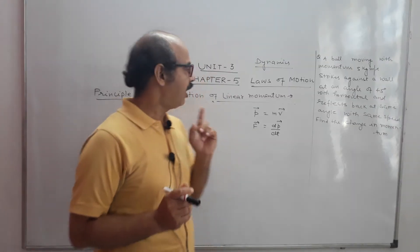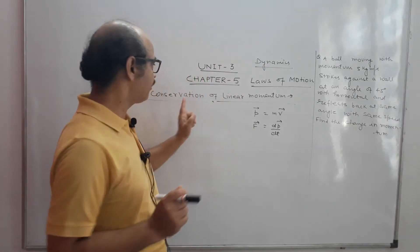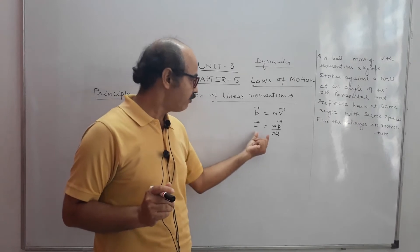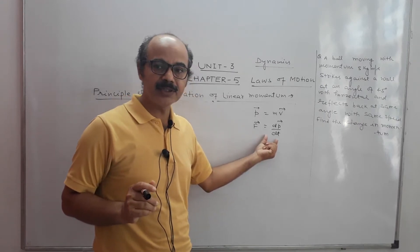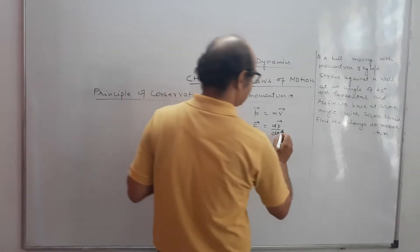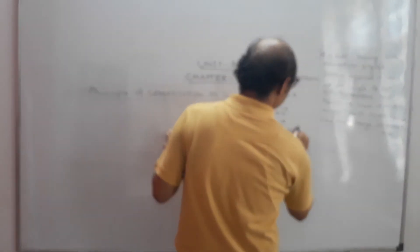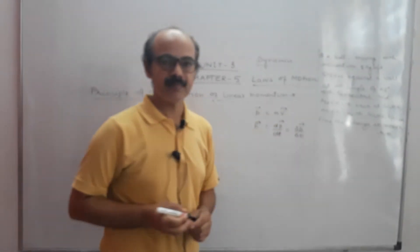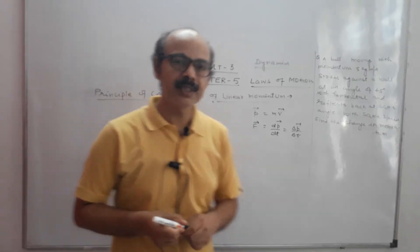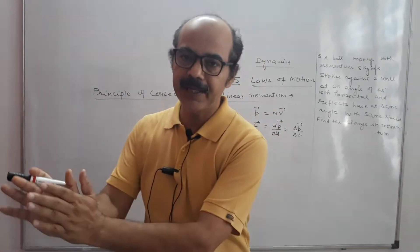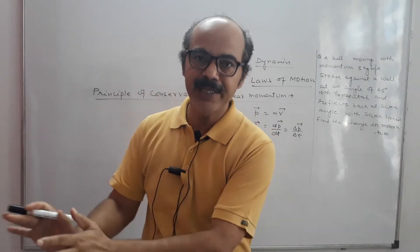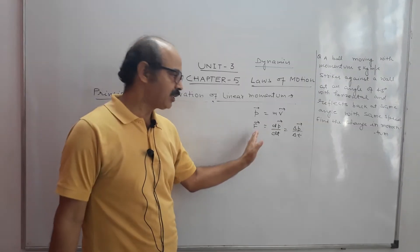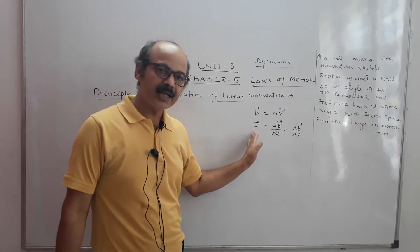Now we are going to study the Law of Conservation of Momentum — very important. Force and momentum are related to each other: F is equal to dP by dT, and F is equal to delta P by delta T. When force is applied on a body then its momentum changes, and the rate of change of momentum is equal to the applied force. This is what we discussed in the last class.